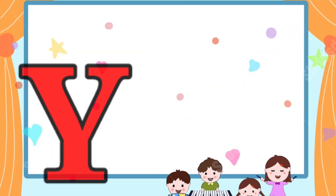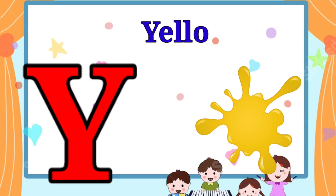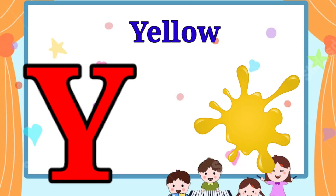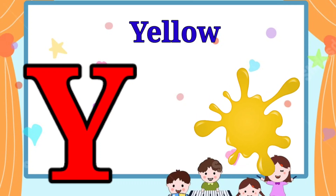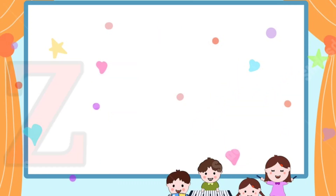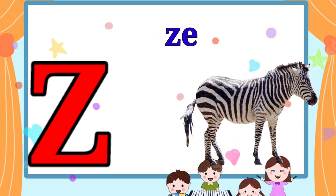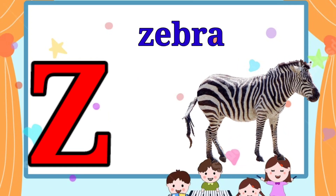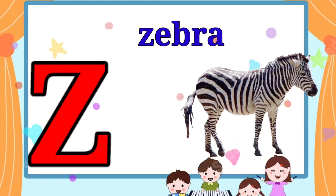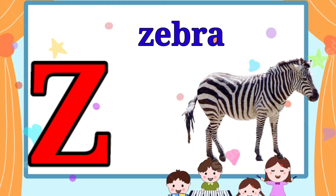Y is for yellow, ye-ye-yellow. Z is for zebra, z-z-zebra.